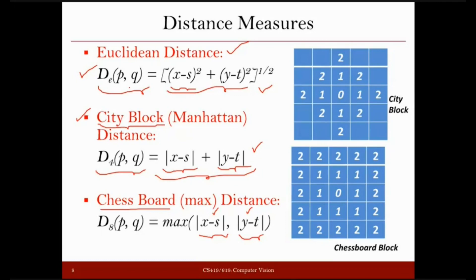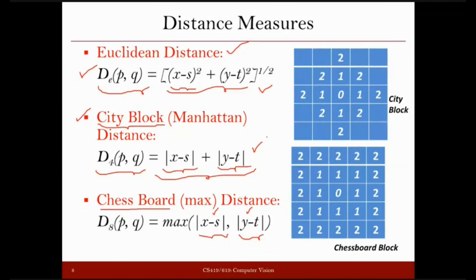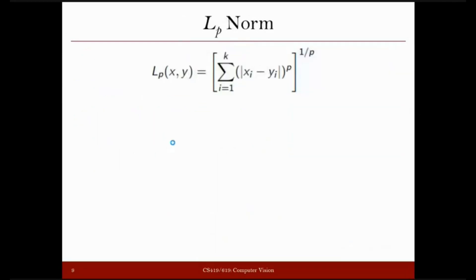If you replace p with infinity, this becomes the max distance. To understand why: when p is very large, you raise all the differences to a very large power and sum them. For example, if the differences are 1, 2, 1, and 10, the term with the maximum difference (10) will completely dominate the sum when raised to a very large power. So the sum is approximately 10 to the power p, and taking the p-th root gives just 10, which is the maximum of the differences.